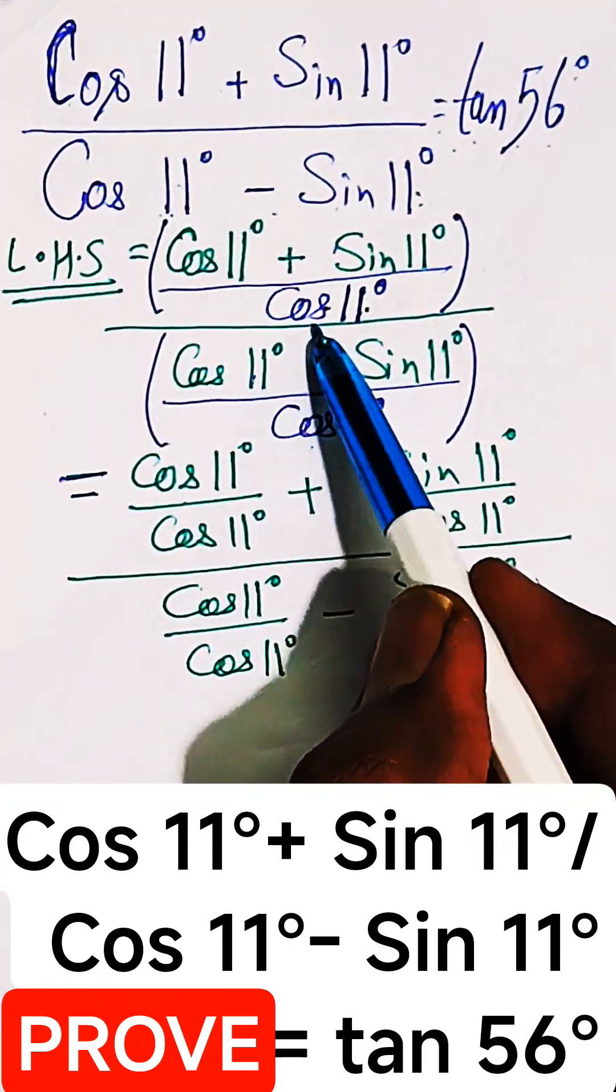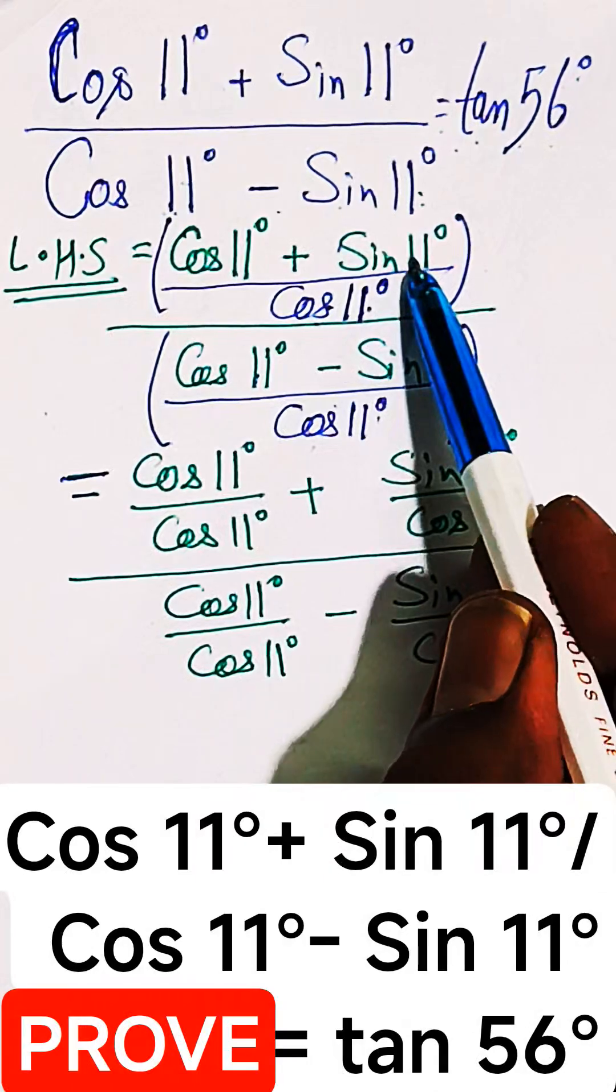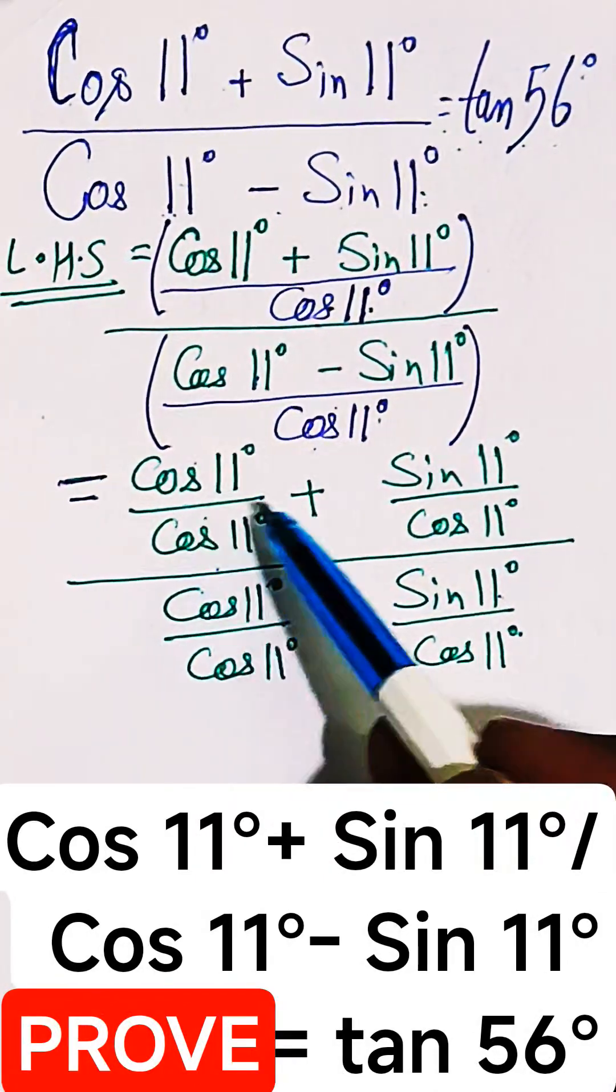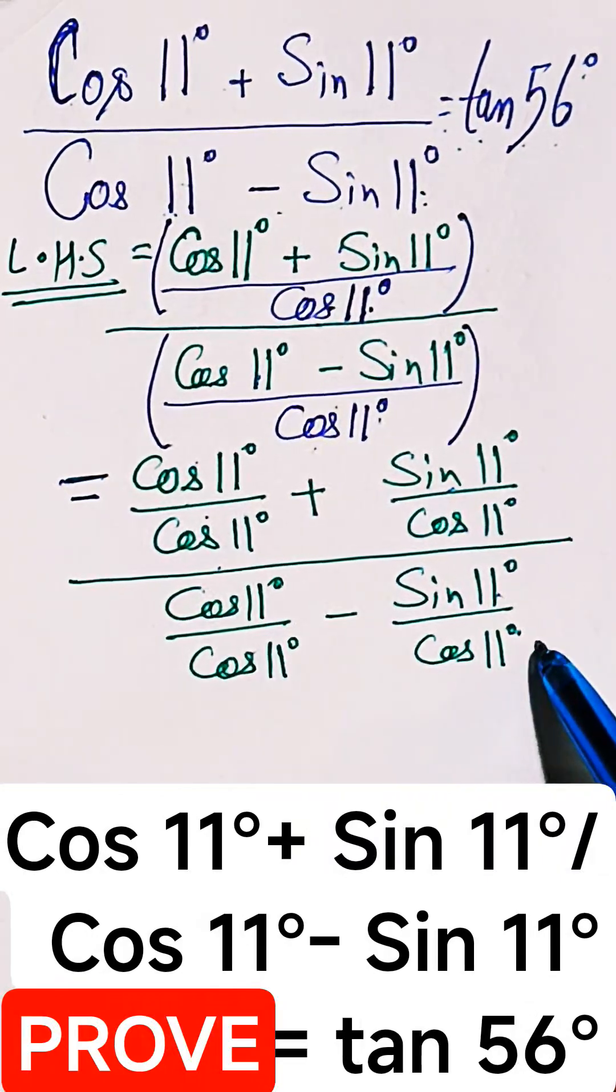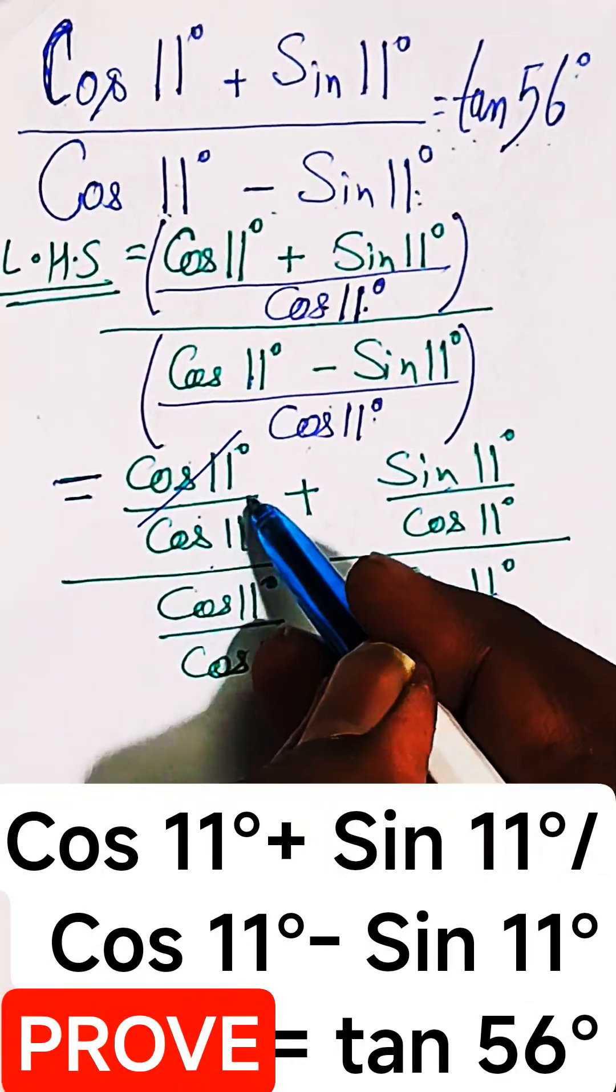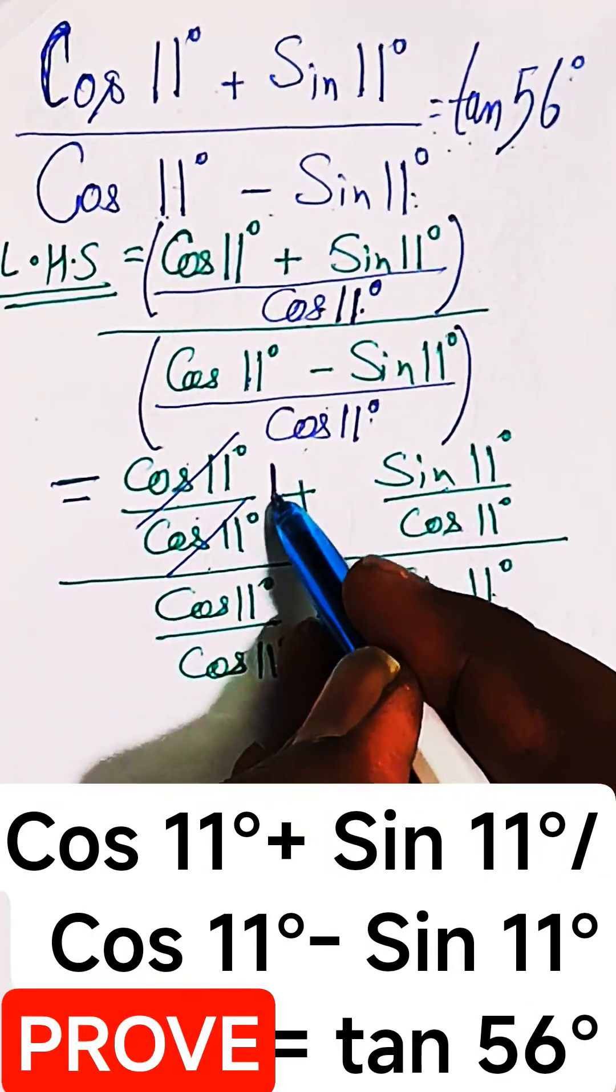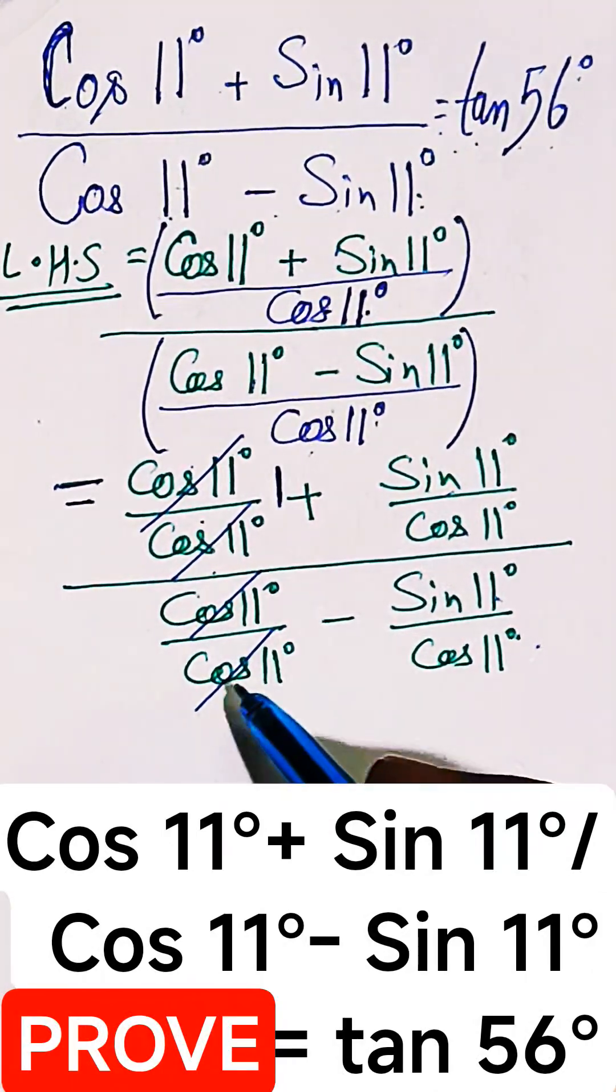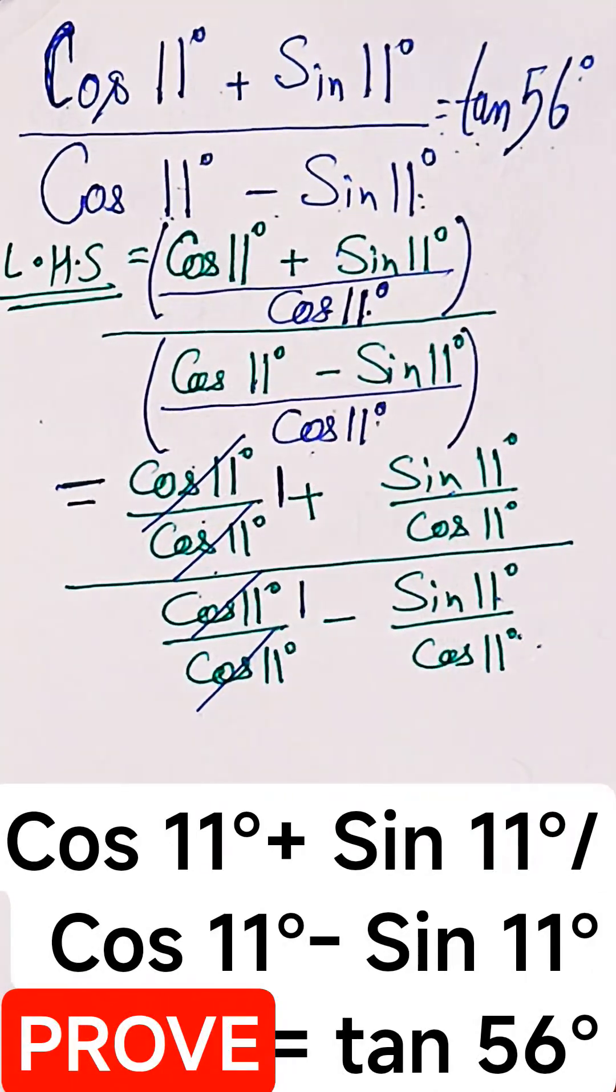Because we divide this cos 11 and sin 11 will be individually divided by cos 11. It happens in the numerator and it happens in the denominator. And you can see cos 11 and cos 11 will be cancelled out and one will be left. And here also cos 11 will be cancelled out and we're left with one.